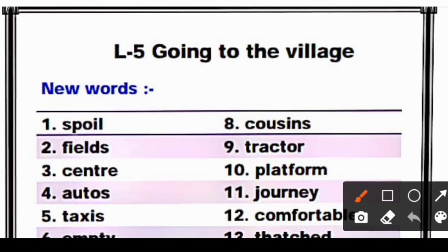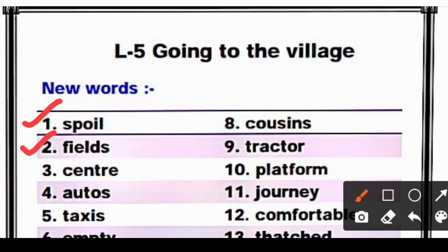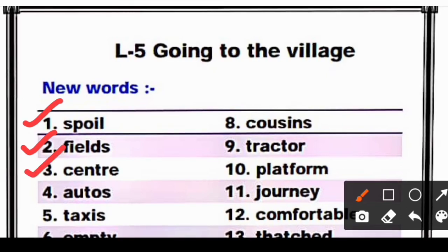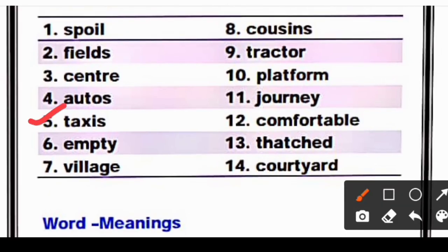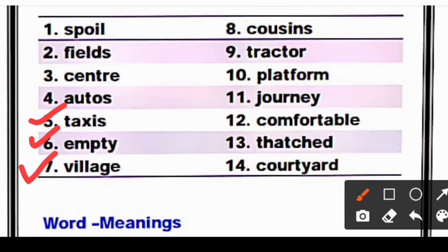First is 'spoil' — S-P-O-I-L, spoil means to destroy. Second is 'fields' — F-I-E-L-D-S, fields. Third is 'centre' — C-E-N-T-R-E, centre. Fourth is 'autos' — A-U-T-O-S. Fifth is 'taxis' — T-A-X-I-S. Sixth is 'empty' — E-M-P-T-Y, empty means khali. Seventh is 'village' — V-I-L-L-A-G-E, village means gaon.